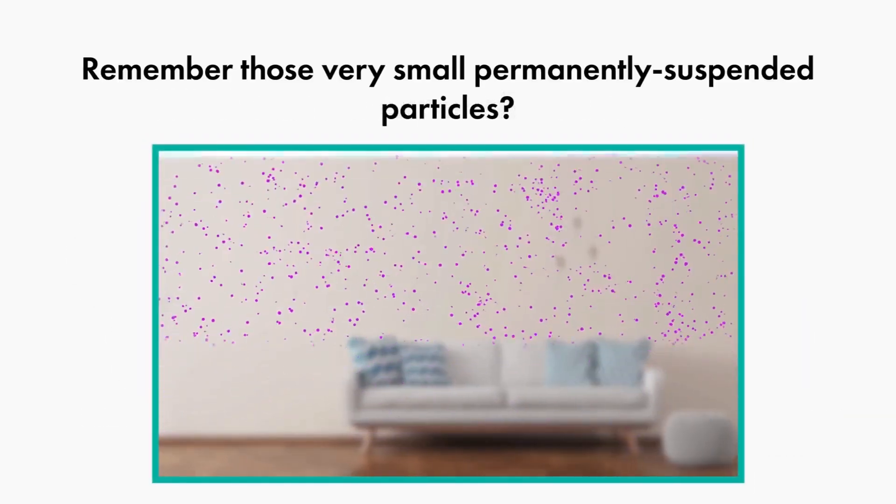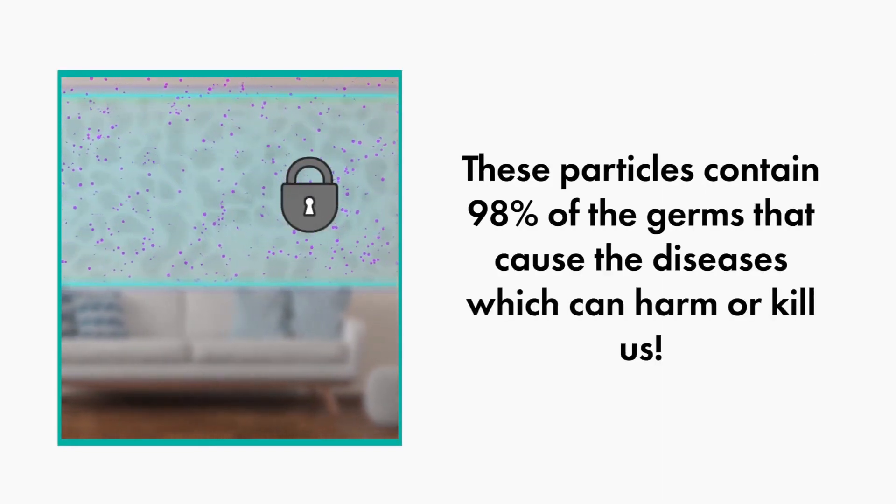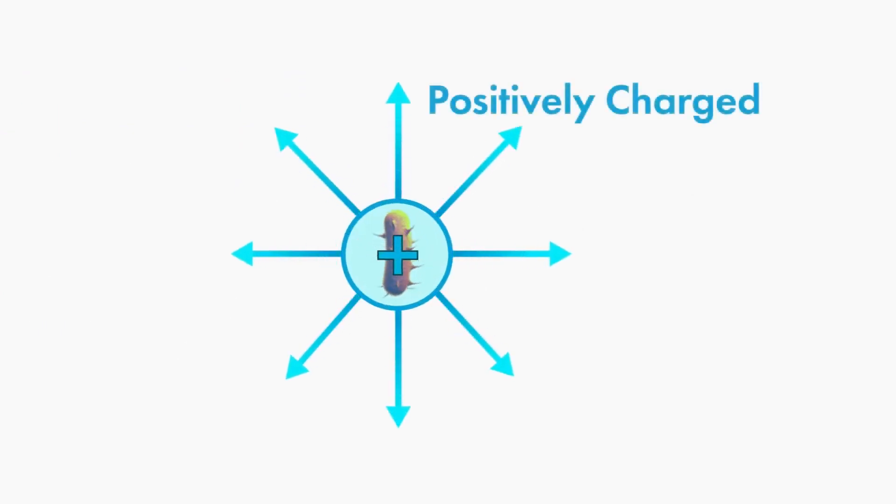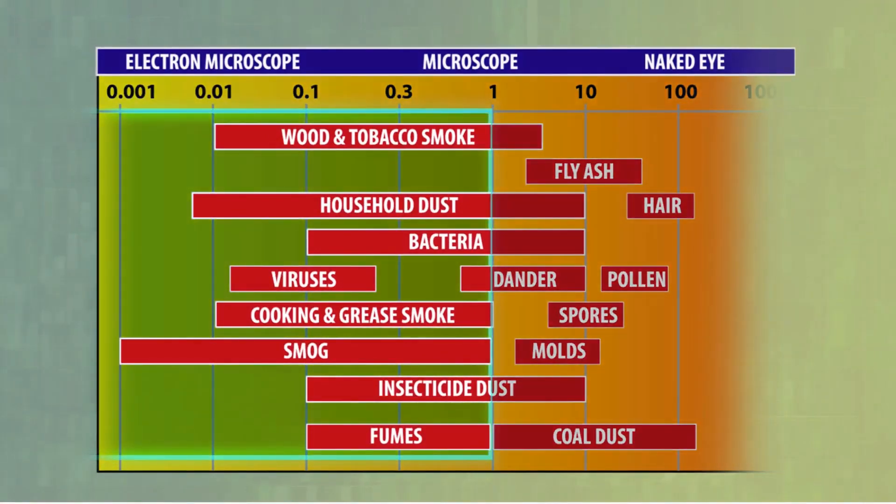Remember those very small, permanently suspended particles? They contain 98% of the germs that cause the disease which can harm or kill us. They're usually positively charged and less than 1 micron in size. Here's where they fall on the same chart.